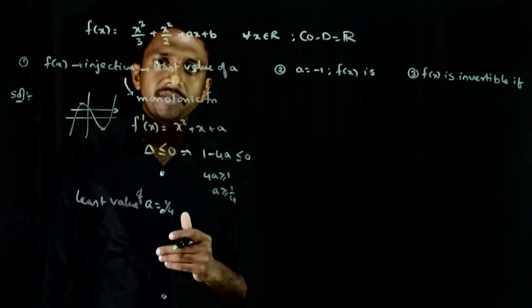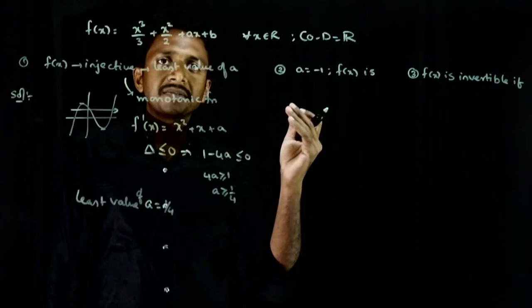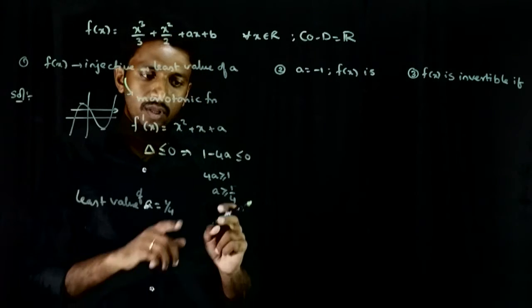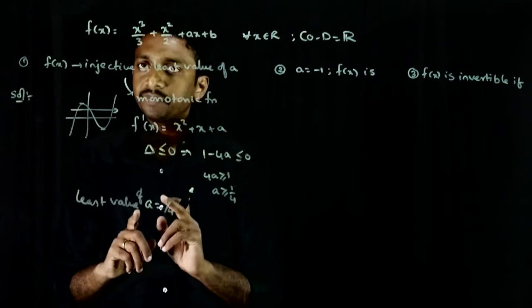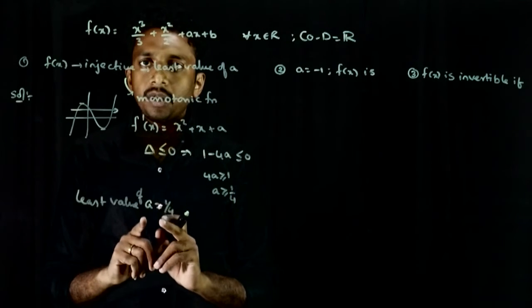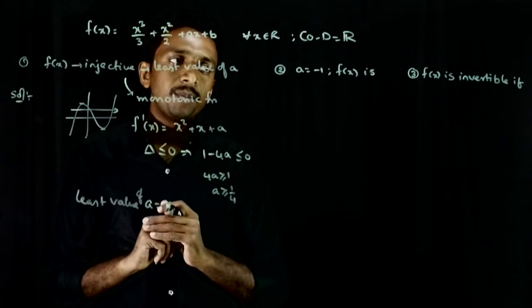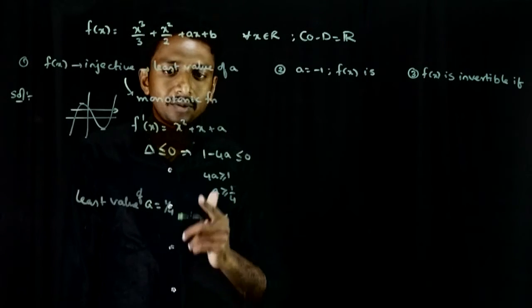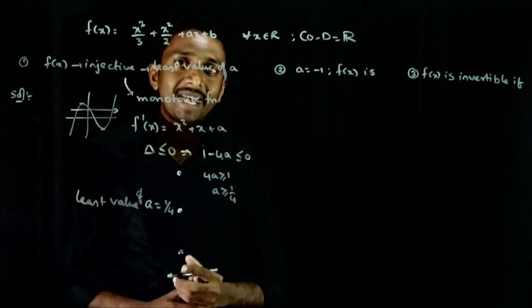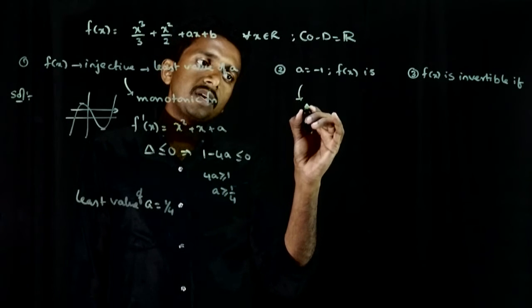A is equal to minus one. So, when a equals minus one, what will f of x be? If a is greater than or equal to one by four, then delta will be less than zero. You get a monotonic function with no maximum minimum. So, if a is minus one, this is less than or equal to one by four, so delta becomes positive. It will have a maximum and minimum. So, this is not one-one.